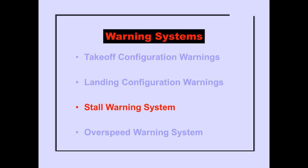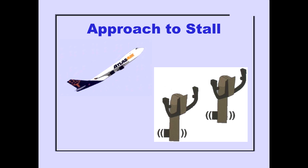Now let's look at the stall warning system. Stall warning is provided by two independent stall warning systems. When the angle of attack indicates an approach to a stall, stick shakers vibrate both control columns.